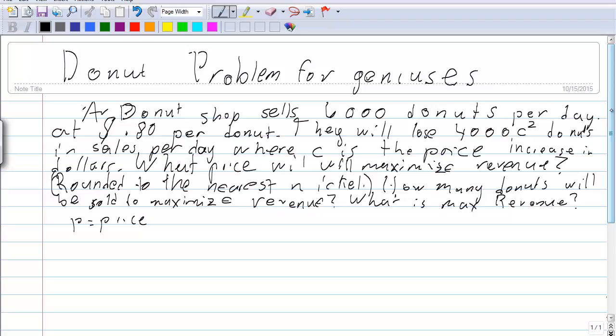What price will maximize revenue rounded to the nearest nickel? We're going to do not $0.81 but $0.80 or $0.85 or whatever like that. And how many donuts will be sold to maximize the revenue? And then finally, what is the max revenue?